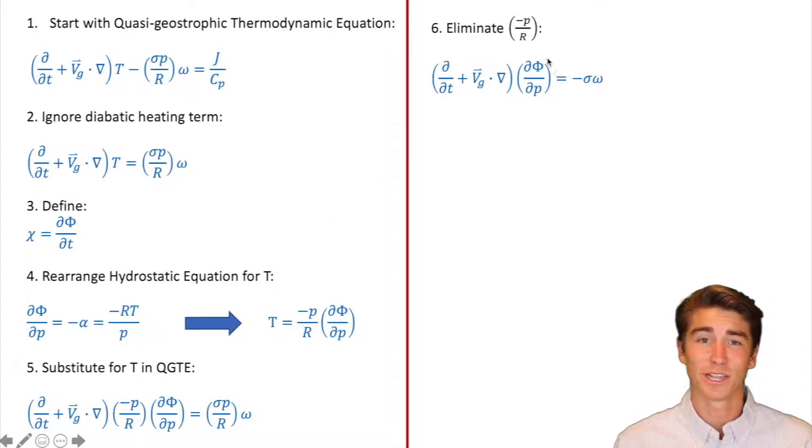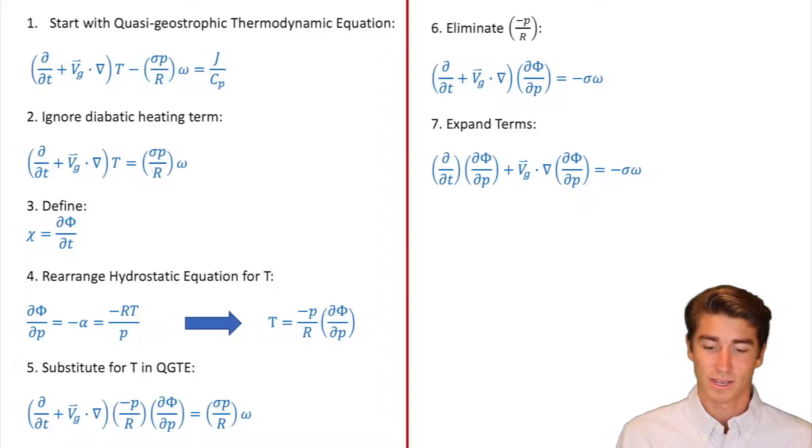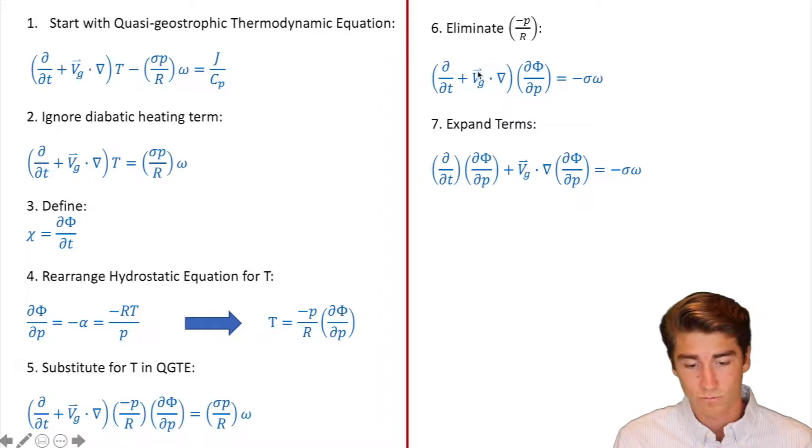Step six, we are going to eliminate negative P over R. So you see there's a negative P over R here. On the right side, we have a P over R. So what we're going to do is take that R, put it up top. Those R's cancel. Take that negative P, put it down low. Those P's cancel. And the negative is going to stay. In step seven, we're going to expand the terms. By expand the terms, I just mean almost like you would in a multiplication problem. We're going to multiply those in. So this becomes dT, d phi, dP. And this advection term becomes advection, d phi, dP. Right hand side totally stays the same.